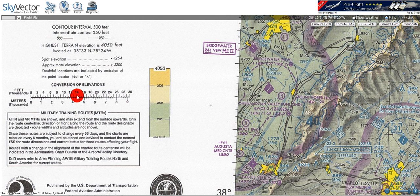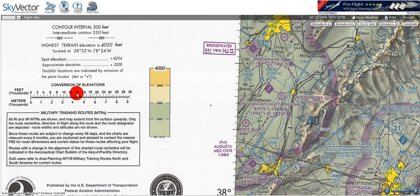Moving down to the next element, we can see that there's a conversion scale to go from feet to meters, and vice versa. Simply go from one end of the scale — in this case, if we wanted to go from feet, we would go to the top of the scale and find the corresponding answer on the bottom scale, which would be in meters.